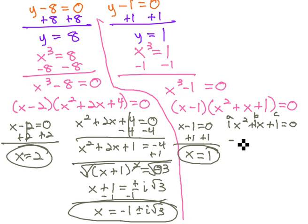So the opposite of b, negative 1, plus or minus the square root of b squared, 1 squared, minus 4a, which is 1, c, which is 1, all over 2a, which is 1.